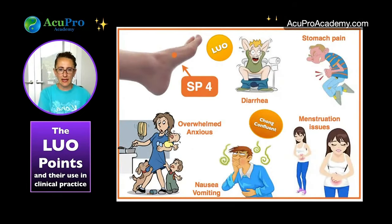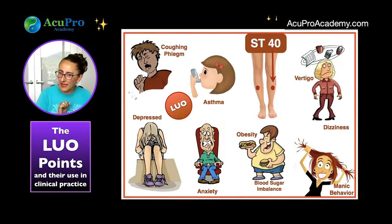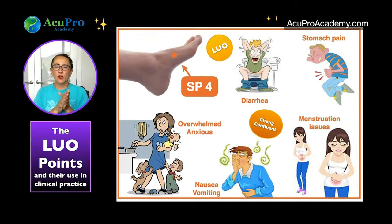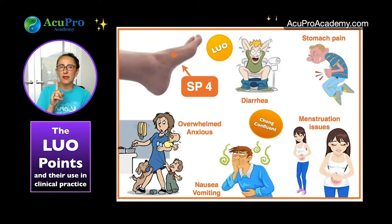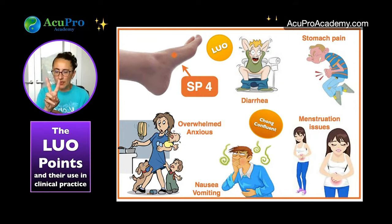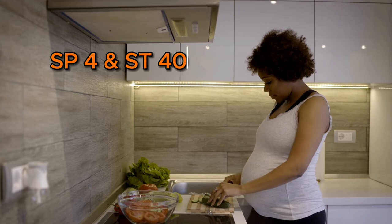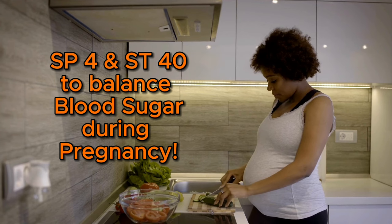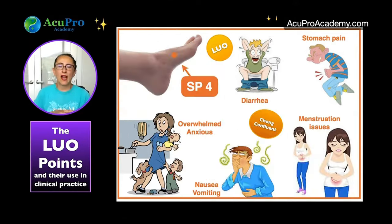Next, SP4 and ST40 — I absolutely love these two. Together they complement each other in two ways. First, for balancing the digestive system, specifically when there are blood sugar imbalances. For people with a tendency toward type 2 diabetes, I use that combination a lot during pregnancy to keep blood sugar levels stable, especially for women with a history of gestational diabetes.